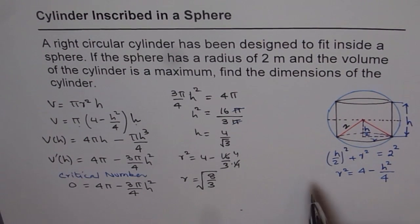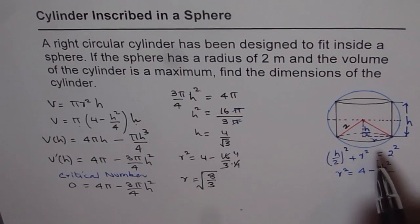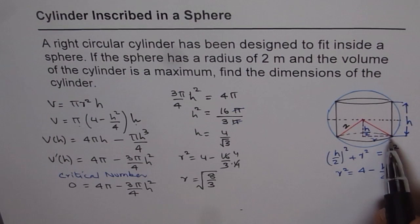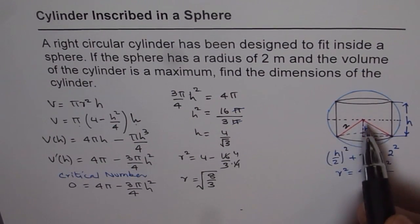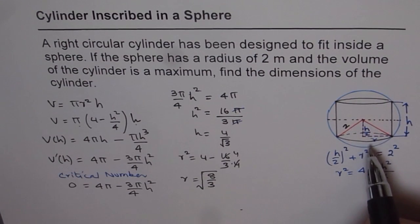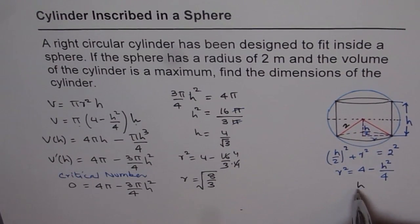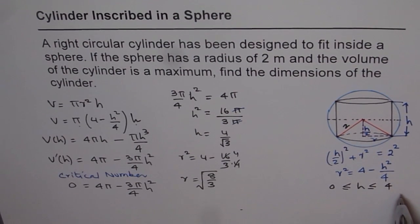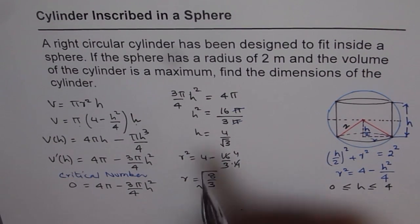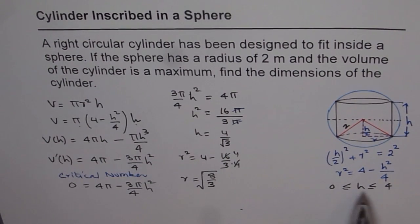Now we have to prove that this critical number indeed gives a maximum. To do that, we should find the restrictions on this height. Since we are in a sphere of radius 2 meters, the height could be maximum 4 meters. So h is between 0 and 4. Let's find the value of volume for the critical numbers: 4/√3, 0, and 4.